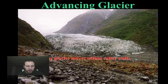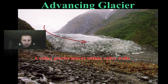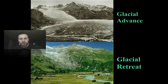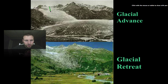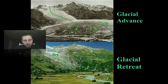Here's an advancing glacier that has come from this region and is moving down through this valley. In this diagram of glacial advance and retreat, we can see the glacier started up here, moved into this valley region during a colder period, and on the bottom image you can see the glacier has retreated back up into the mountainside.